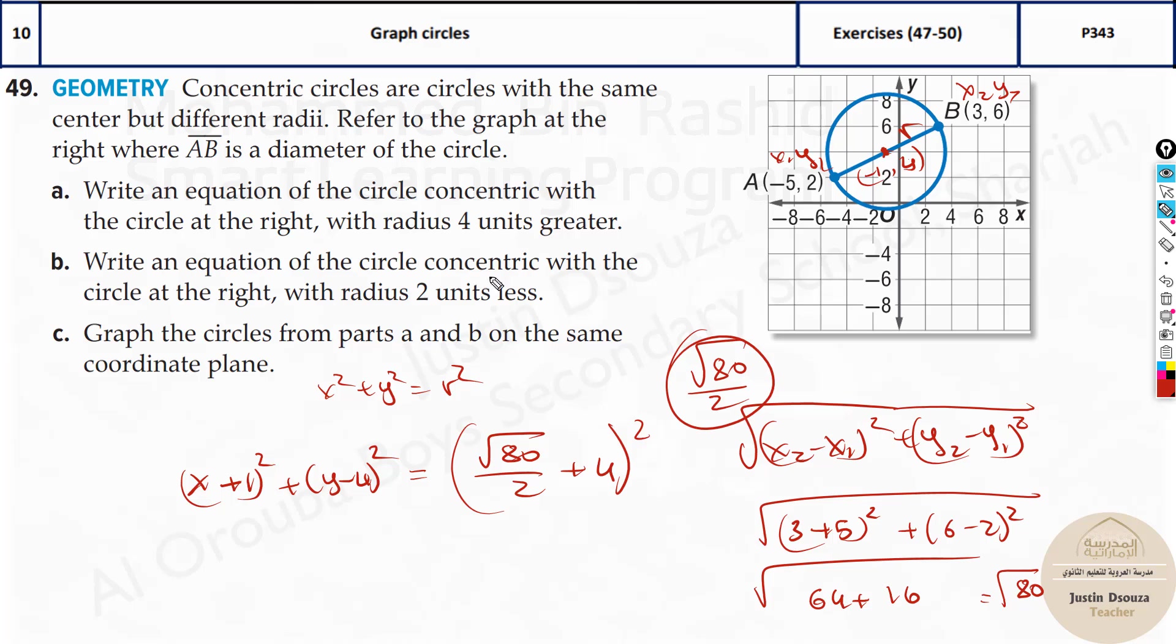Next one. Write an equation of the circle concentric with radius 2 units less. I'll write it out: (x + 1)² + (y - 4)² equals, here, all you need to do is √80 by 2 minus 2 the whole squared. This is the answer. Graph the circles from part A and B on the same coordinate plane. If you have a compass, you have to do this in the calculator and then draw that radius and one more radius.